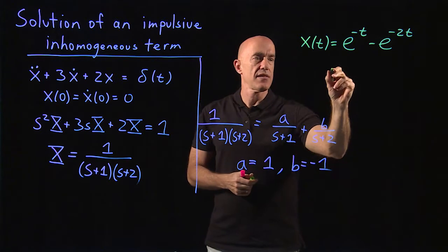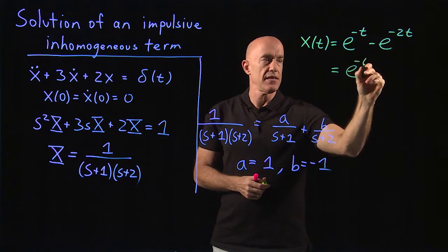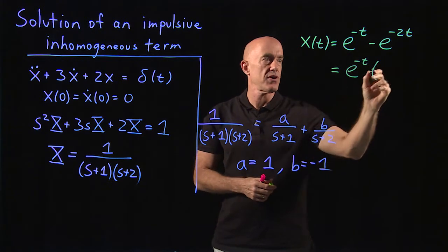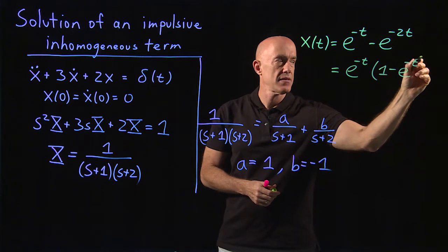If you write that in a nicer way, you would factor out the e to the minus t term, which is the dominant term. And you would have a 1 minus e to the minus t.